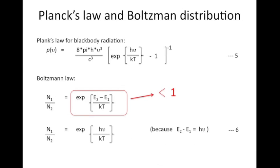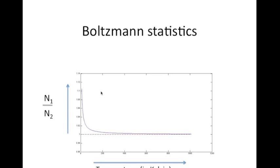But can we achieve population inversion in an atom at thermal equilibrium? Looking at Boltzmann law, we can make N2 greater than N1 only if we can make the exponential quantity in the equation smaller than 1. We can try to reduce this quantity by increasing the temperature. From the plot, it is clear that upon increasing the temperature the ratio N1/N2 becomes close to 1 but never becomes smaller than 1. So we cannot achieve population inversion by increasing the temperature, even at temperatures as high as 1000 Kelvin.